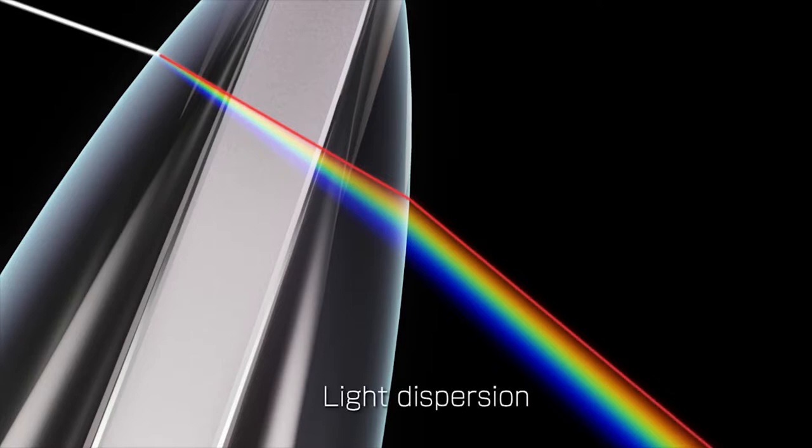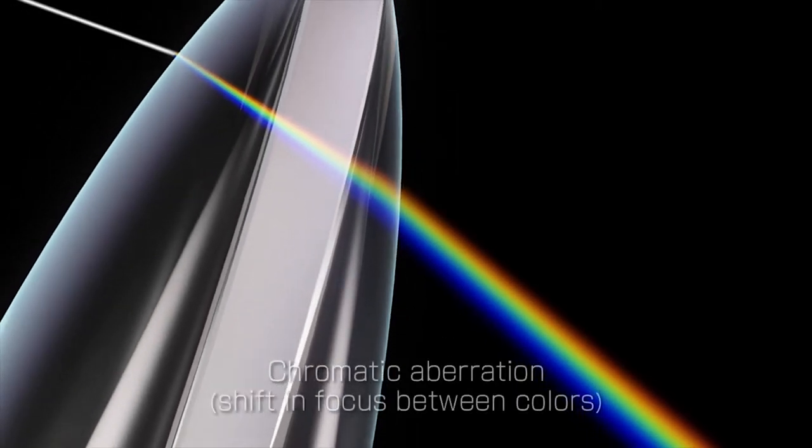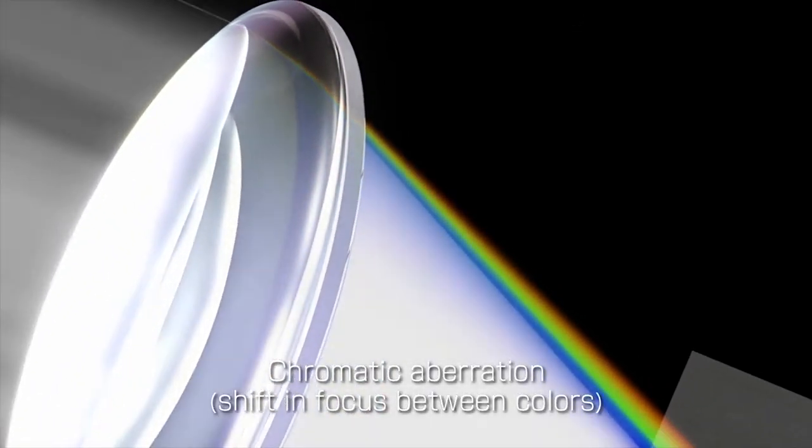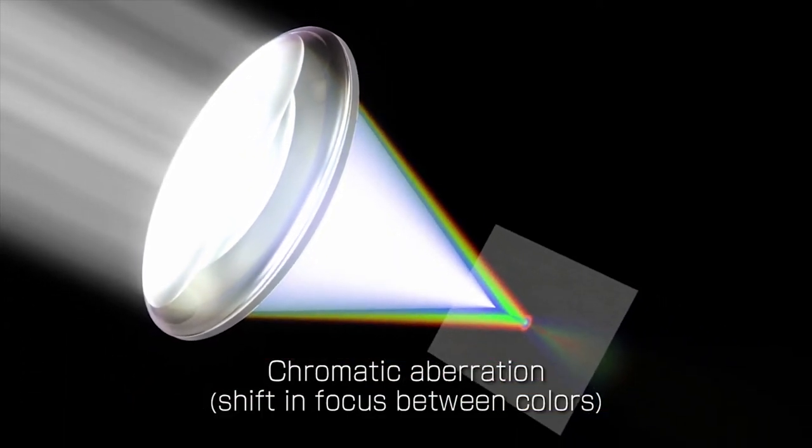Red light, which has a long wavelength, and blue light, which has a shorter wavelength, bend differently, causing the point of focus to shift slightly for each color. This phenomenon is called chromatic aberration.